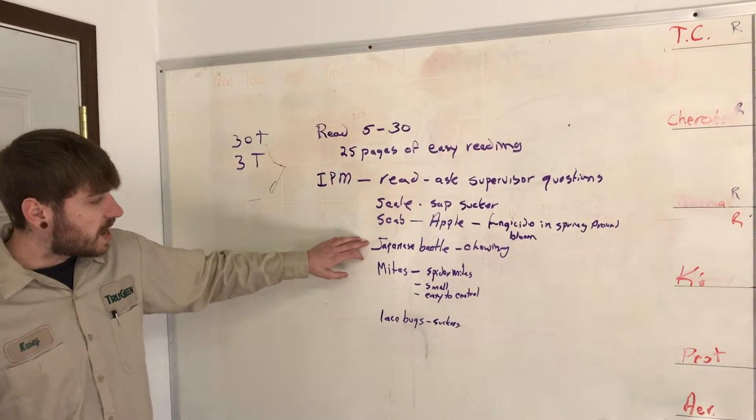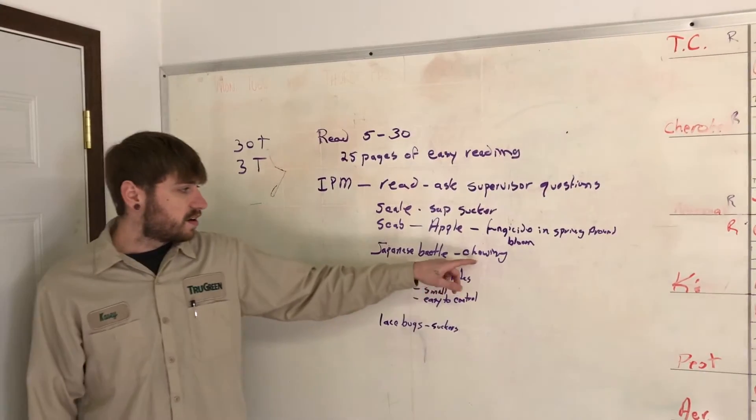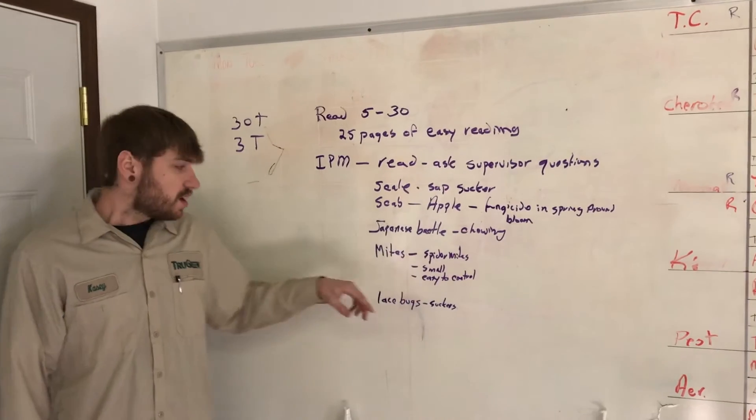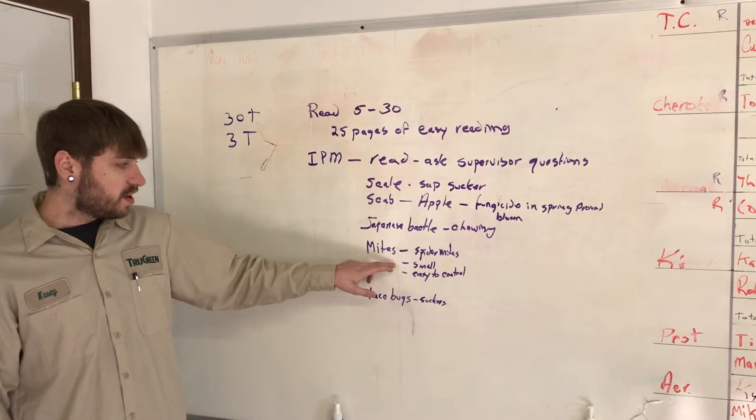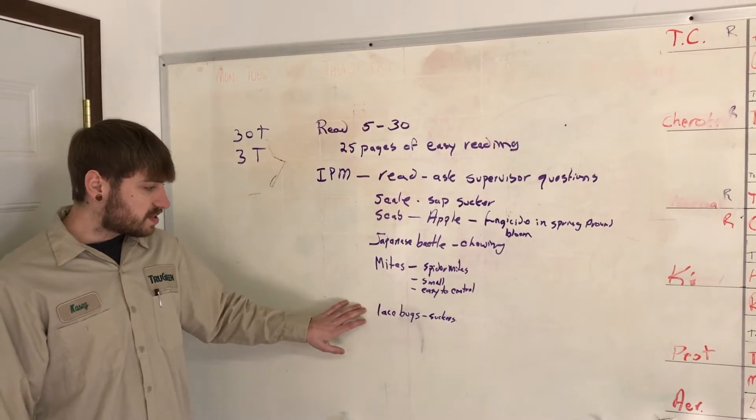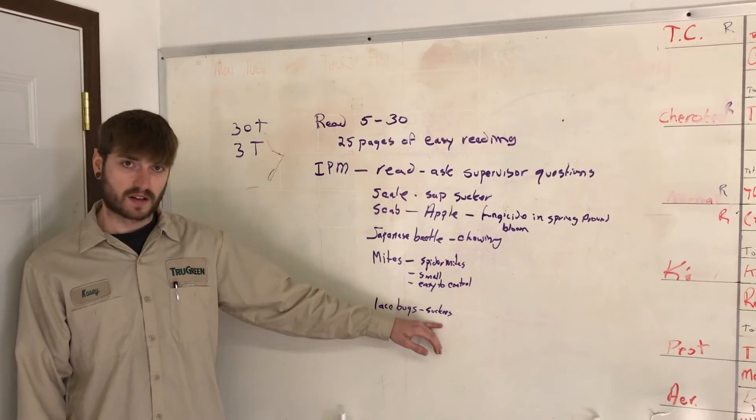It also talks about Japanese beetles. They are a chewing insect. It also talks about mites, especially spider mites. They are small, easy to control. It talks about lace bugs, and lace bugs are also a sucker.